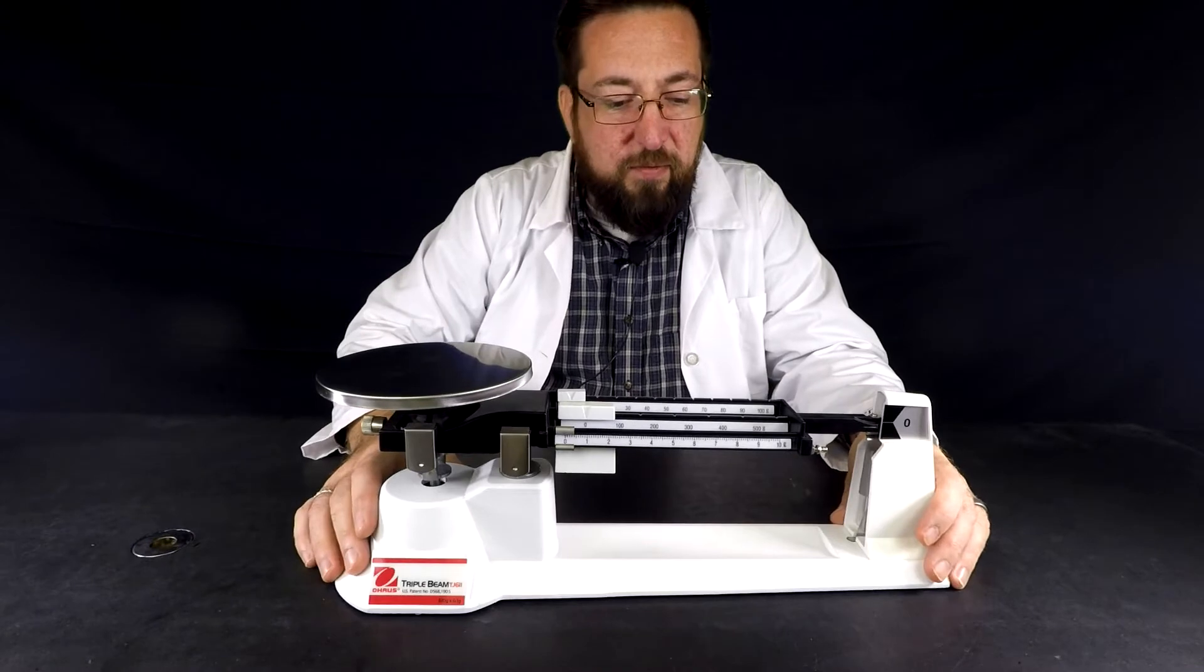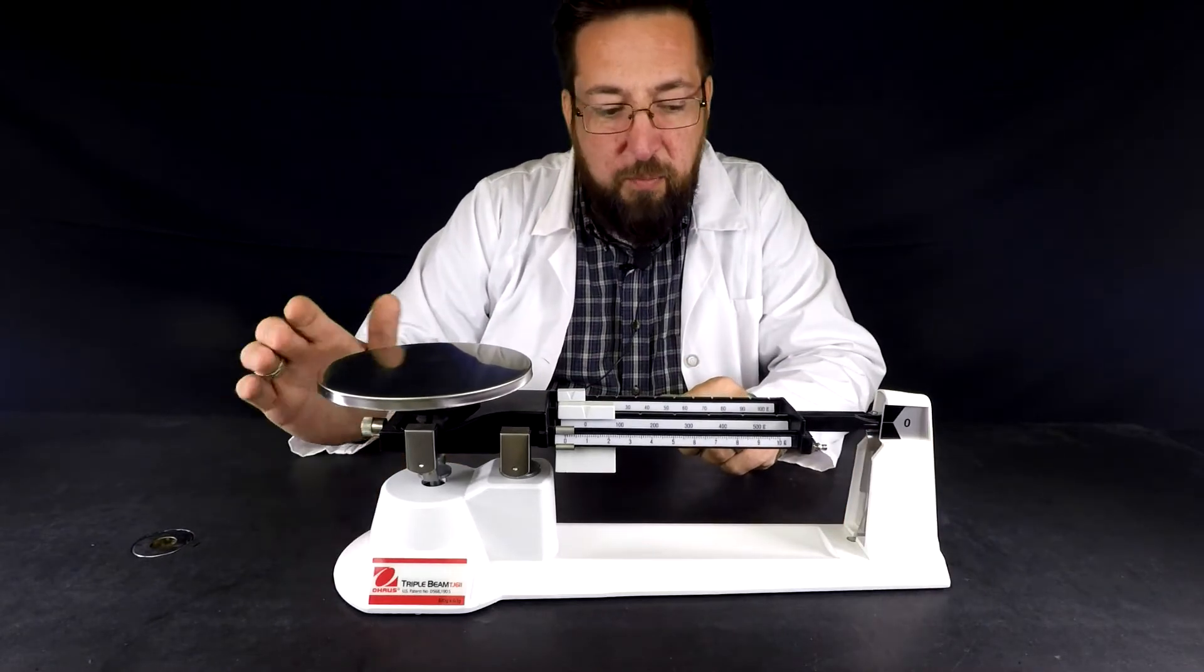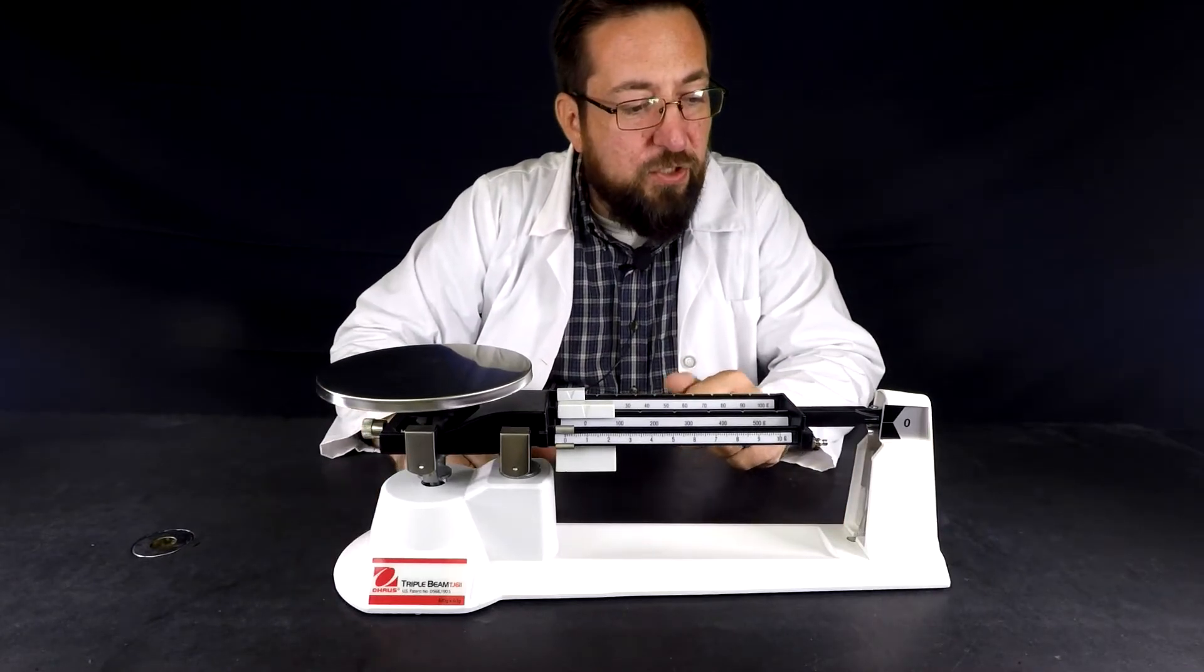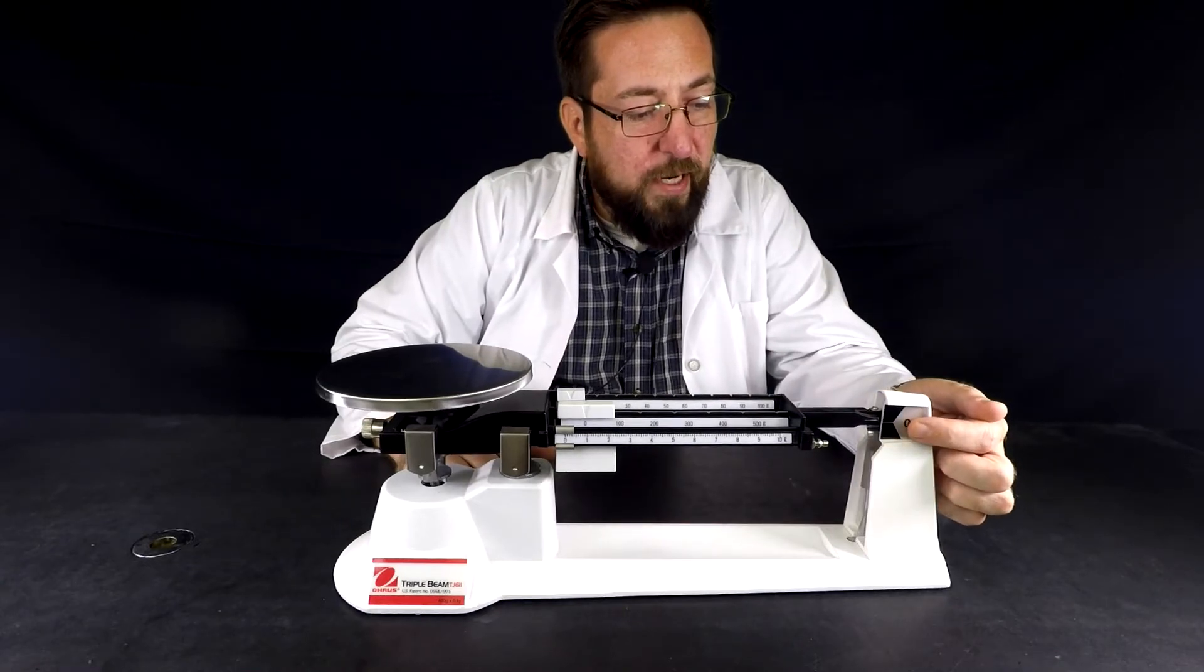So after I've moved all the riders to the left, cleared off the pan, I next want to check and make sure that the zero marker is reading on the line correctly.